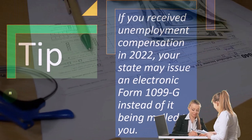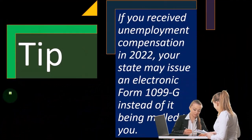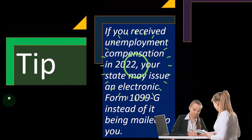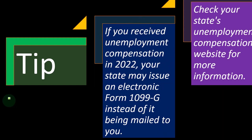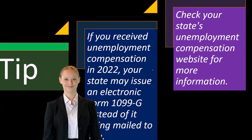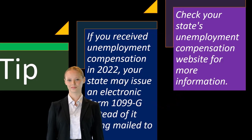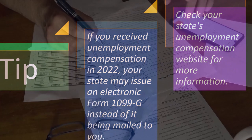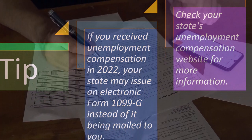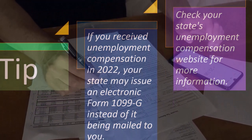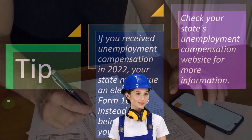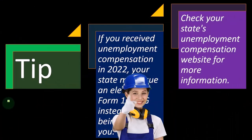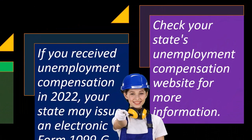Tip: if you received unemployment compensation in 2022, your state may issue an electronic Form 1099-G instead of mailing it to you. If you didn't get it in the mail, check your state's unemployment compensation website — it may be available in a digital format. Make sure you report your unemployment income regardless, because you can't tell the IRS you didn't get the 1099; the IRS will certainly have received it and will correct your return.